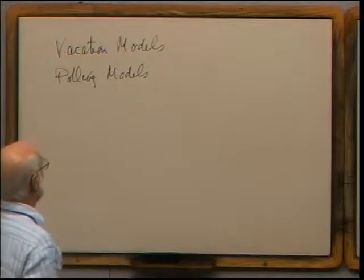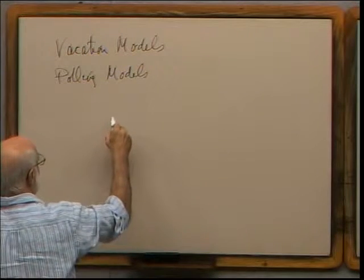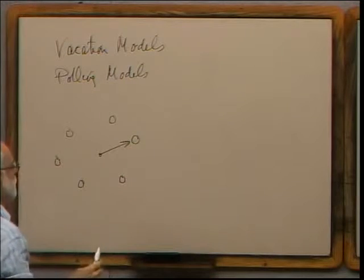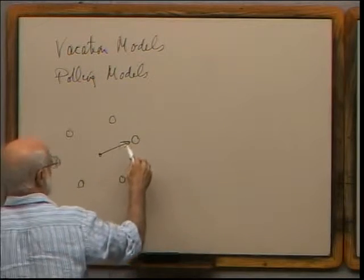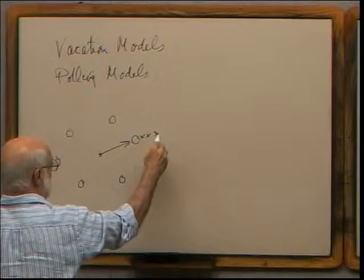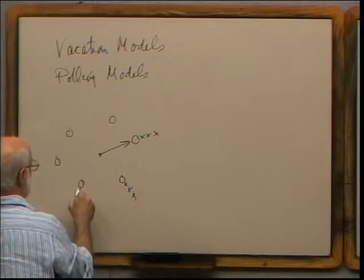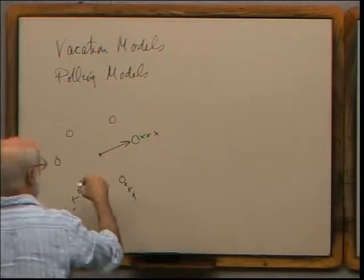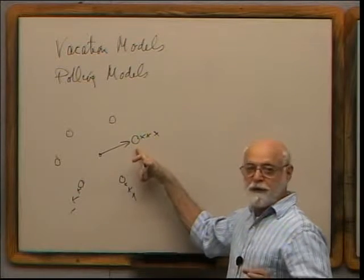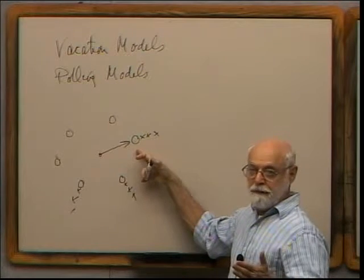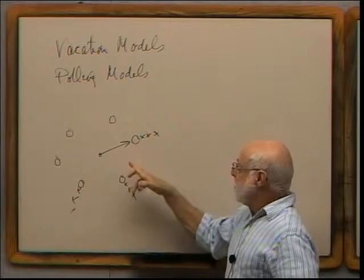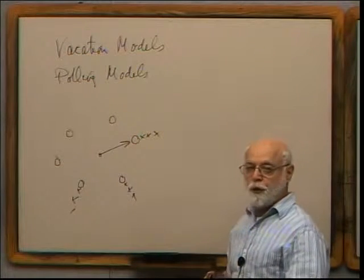The basic idea of the polling model — and that's where the vacation model came from — is that you have a bunch of queues or stations and a single server. The server visits the stations in sequence in the simplest model: go to the first station, serve all the messages or customers waiting there, and when no one is left waiting, switch to the next station. It's called polling because you poll the station and ask whether there's work to be done.